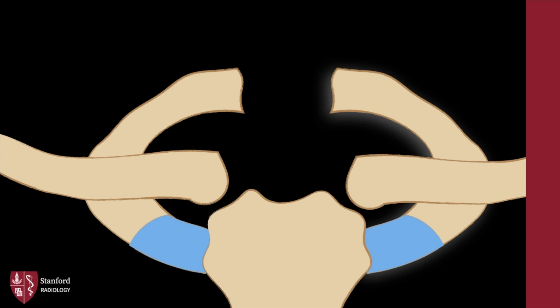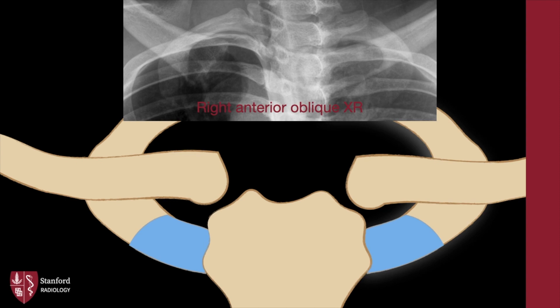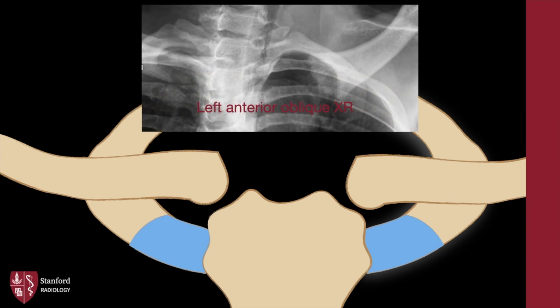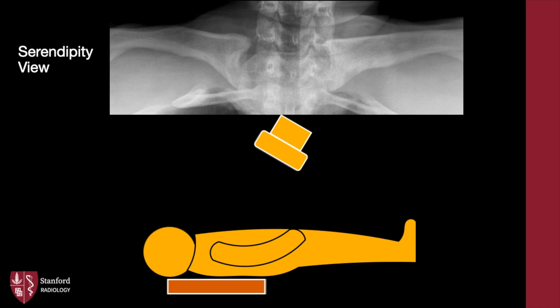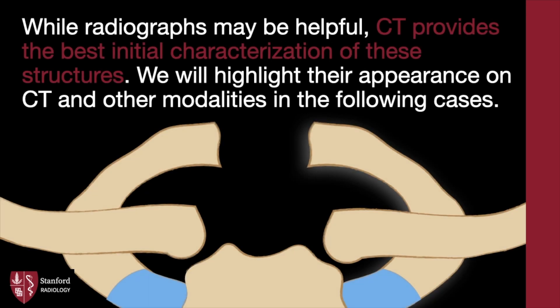The clavicular notch is where the clavicle articulates with the manubrium. Dedicated radiographic views of the sternoclavicular joints involve frontal, right anterior oblique, left anterior oblique, and upshot views. The upshot or serendipity view is critical for alignment — the x-ray tube is angled 40 degrees cephalad and directed towards the clavicles. While radiographs may be helpful, CT provides the best initial characterization of these structures, as we will highlight in the following cases.